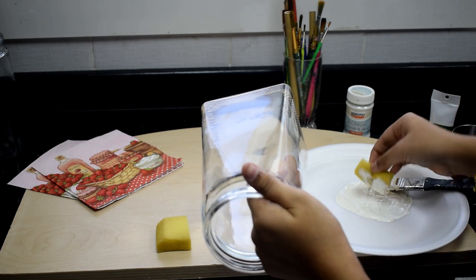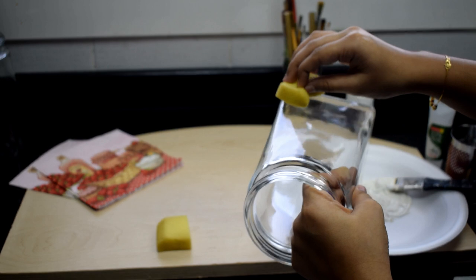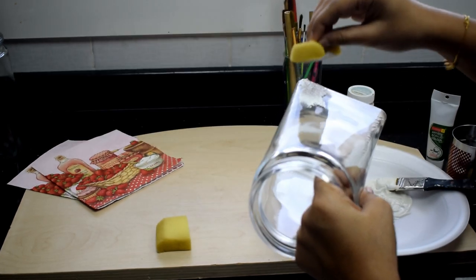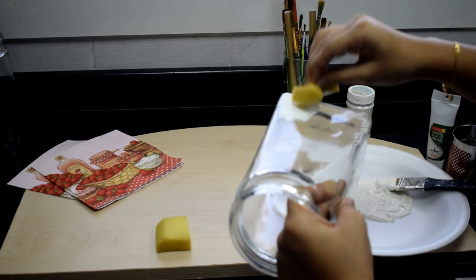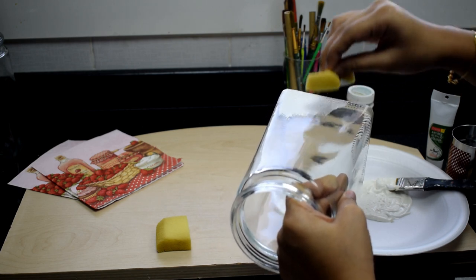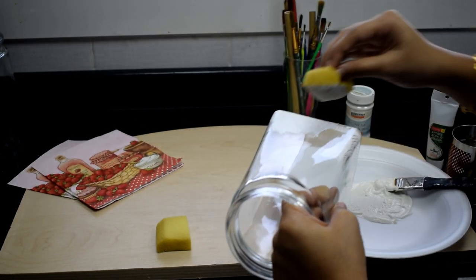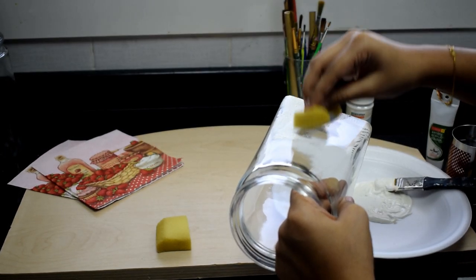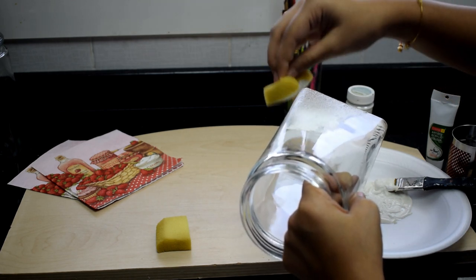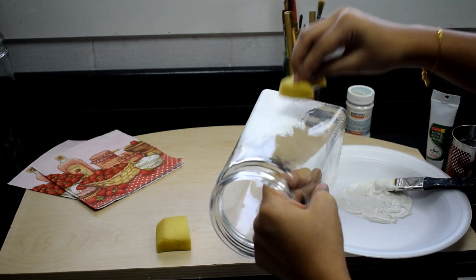The first step is to apply acrylic paint onto this bottle using sponge. Take a little paint on the sponge and apply it. Remember, don't apply too thickly. First we apply a single coat and then let it dry.